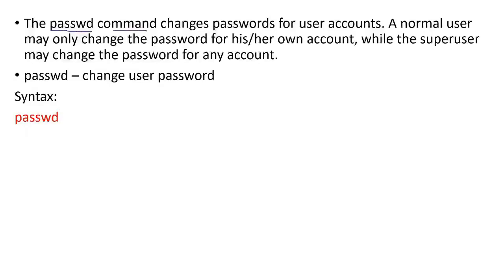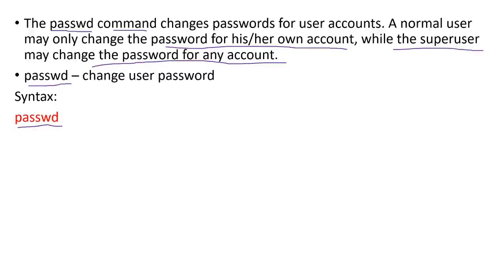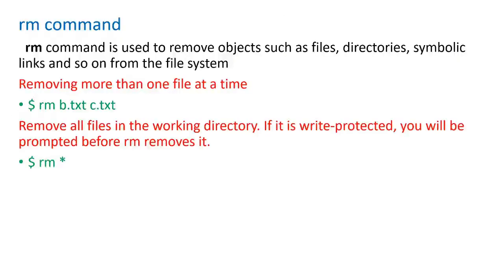Next command we will see is passwd. It is passwd, that is nothing but password. As mentioned, if you want to work on the Unix operating system you need accounts. Automatically two accounts will be created: one is the super user account and one is the normal user account. For a normal user account there must be a username and password. A normal user can change his or her own password using the passwd command, while the super user may change the password for any account. The admin super user has all authority — he can change the password of any account and create many accounts. On the terminal, just type 'passwd' and it will prompt you to change the password of your account.